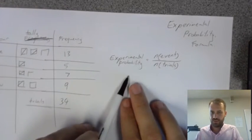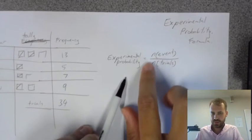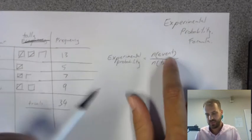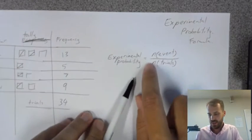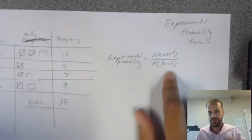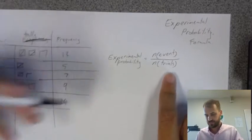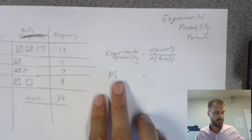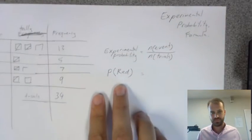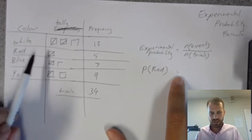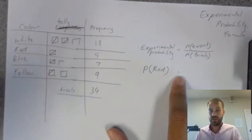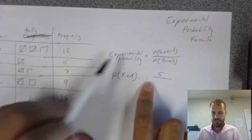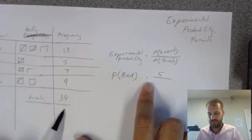Okay, this is our experimental probability formula. Experimental probability equals the number of event. Now, remember, event is a favorable outcome. So, the number of times the favorable outcome happens divided by the number of trials, the amount of times we did our experiment, our trials. Okay, so, the probability of pulling out, in this case, a red disc is equal to the number of times that event happened. So, in this case, we pulled out five red ones. And we divide that by the number of trials that we did. In this case, 34.